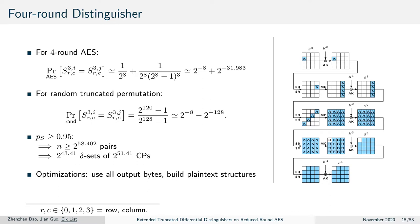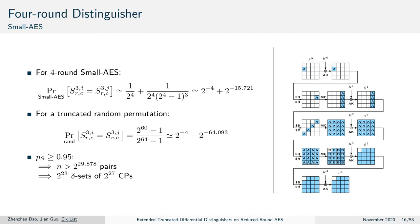While the computational complexity of 2^{51} is somewhat feasible, it is still prohibitive to carry out experiments directly. We considered the minified variant of AES — Small AES — which has 4-bit cells instead of 8-bit cells as in the real AES, by Sid et al. from their 2005 paper. For this reduced construction we used the same formula to compute the collision probability for Small AES after four rounds and the collision probability for a truncated random permutation comparing 4-bit output. For a success probability of 0.95 we needed about 2^{30} pairs, so 2^{27} chosen plaintexts, and this could be implemented.